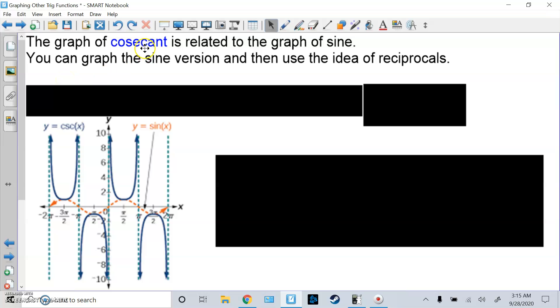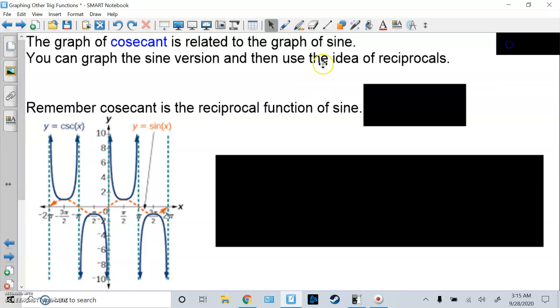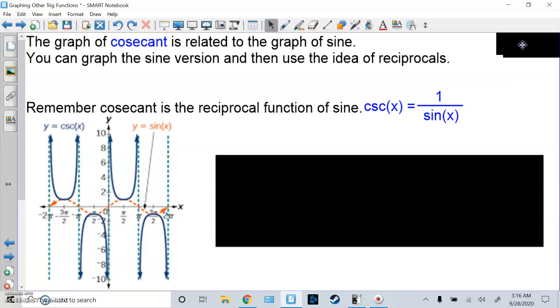Next we have cosecant, and cosecant is related to sine. The best way to graph this is to just graph the sine version and then use the idea of reciprocals. So if I give you a weird transformed cosecant graph, replace cosecant with sine, graph like normal, with the mid-high, mid-low, mid-pattern, and then use the idea of reciprocals. So reciprocals, let me just talk about this for a second. A cosecant is the reciprocal function of sine, so that is 1 over sine. So whatever the values you put right here, you just flip it. So for example, if I have sine of 0, at 0 degrees, sine of 0 is 0, I can't divide by 0, that's why it's undefined here.